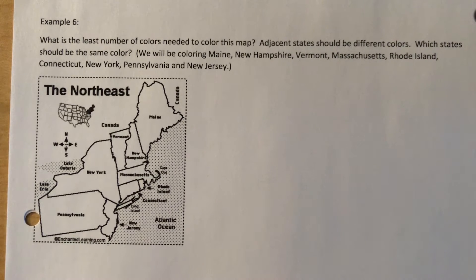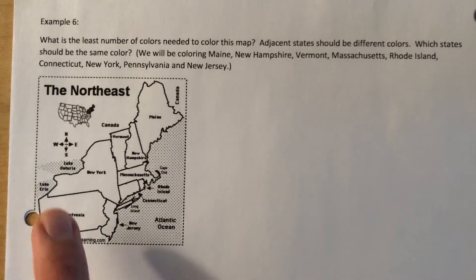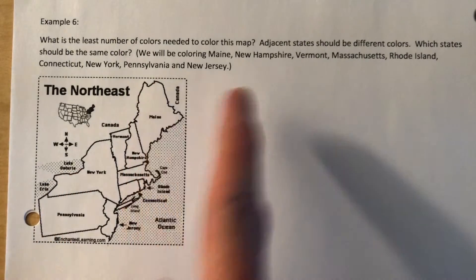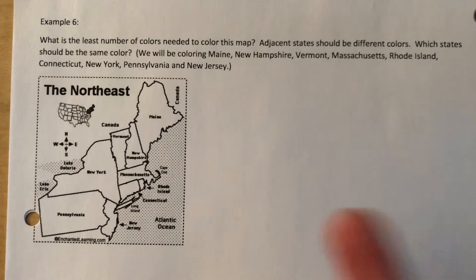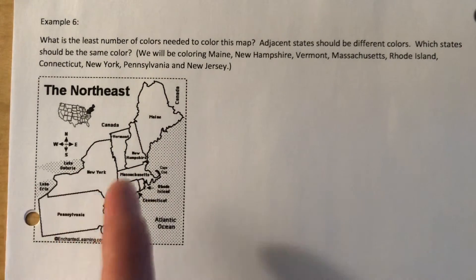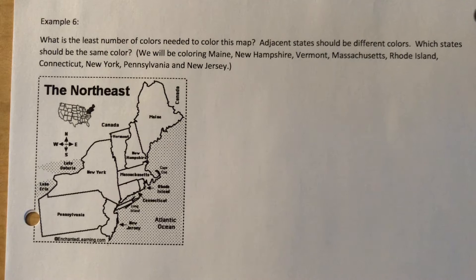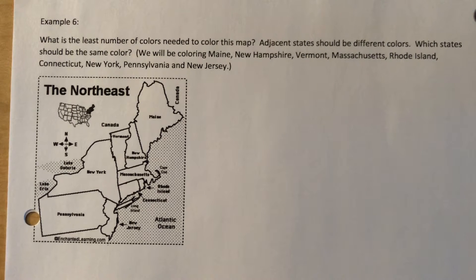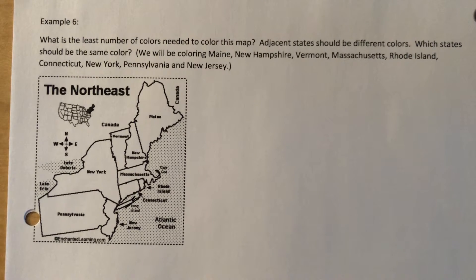We're not going to color the ocean. We're just dealing with these states which are listed. We'll be coloring Maine, New Hampshire, Vermont, Massachusetts, Rhode Island, Connecticut, New York, Pennsylvania, New Jersey — so New England plus a few more. Let's go ahead and make a vertex-edge graph out of this.